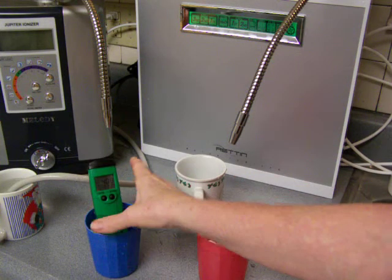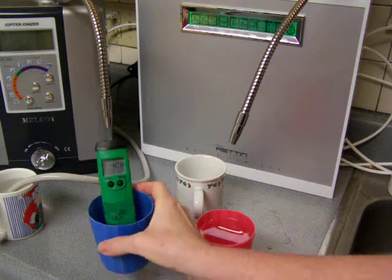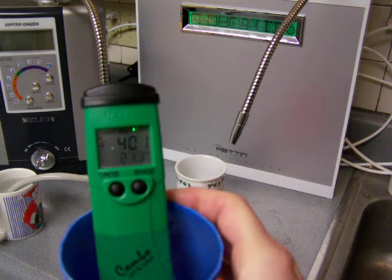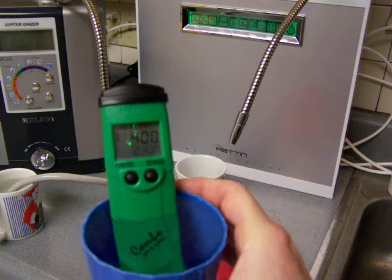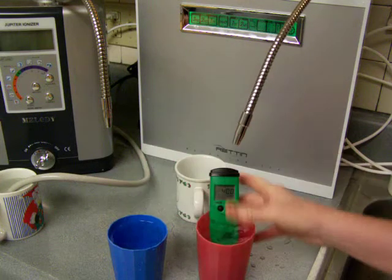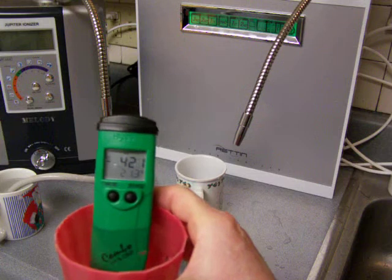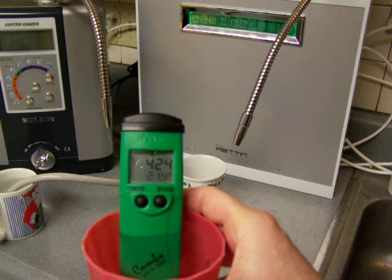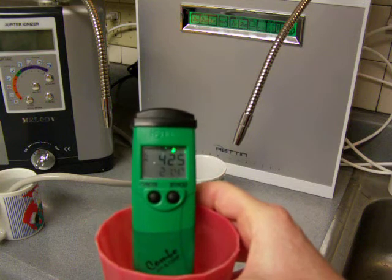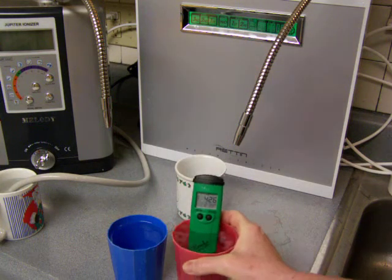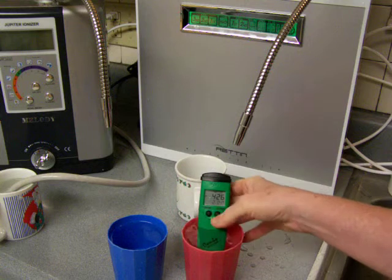All right, so let's just take a look at what the final outcome is after lots and lots of pouring. That's a negative 400 ORP here on the Melody. Let's see what that is over here on the Tyent - negative 425 on the Tyent. That's really awesome, and they're consistently coming out better in the end ORP.